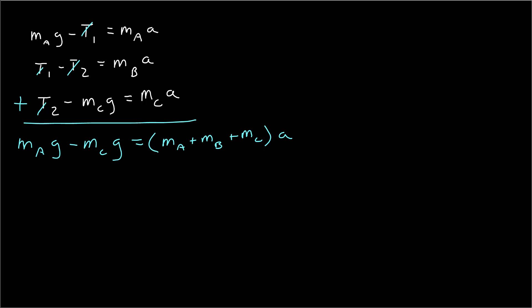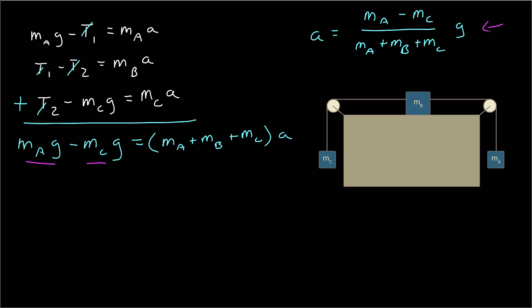Factoring, I get acceleration a equals (mass a minus mass c) divided by (mass a plus mass b plus mass c) times g. This makes physical sense: mass a and mass c compete to pull b. If mass a is larger, everything moves in the positive direction I defined. If mass c were larger, the acceleration would be negative, meaning a goes up and c goes down — opposite to the assigned positive axes. Also, having more total mass in the denominator should lower the acceleration, which it does.